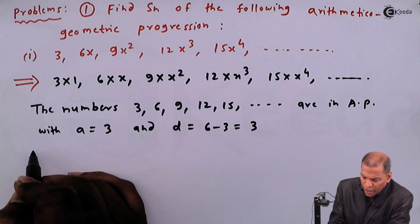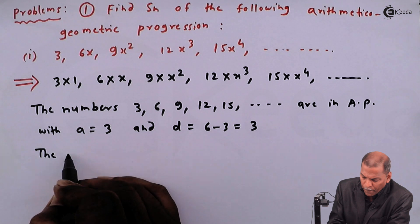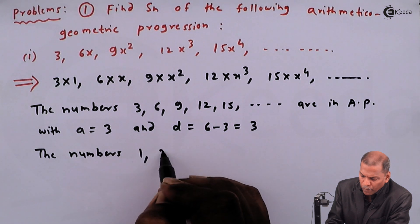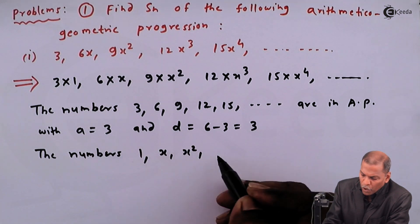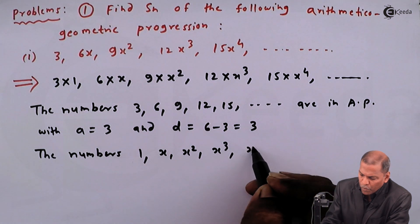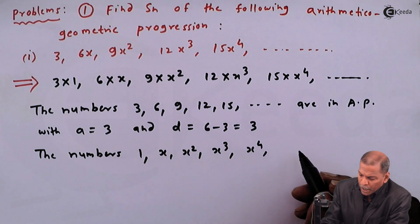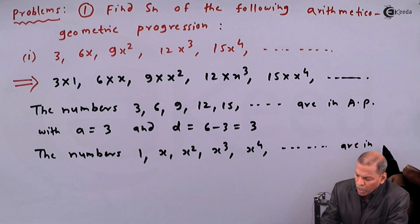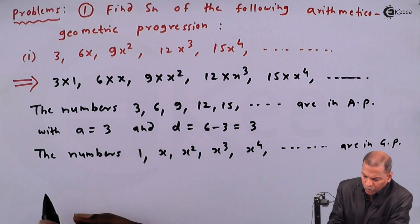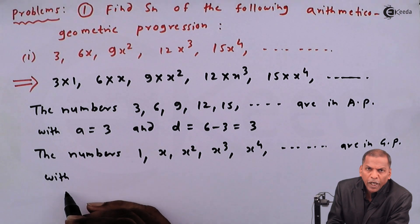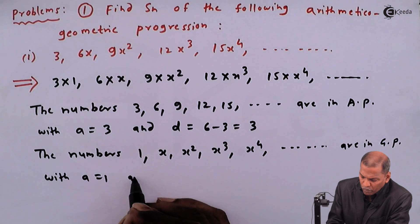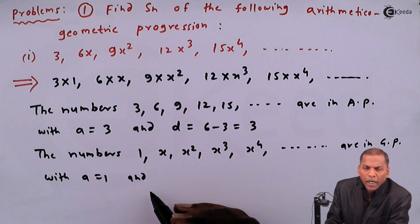Now we consider the second part — the numbers 1, x, x², x³, x⁴ — these numbers are in GP with first term a equal to 1 and common ratio r equal to x divided by 1, which equals x.